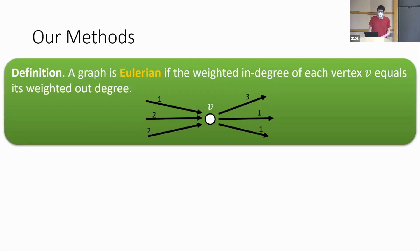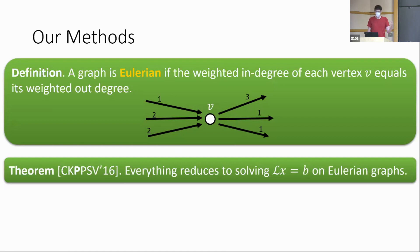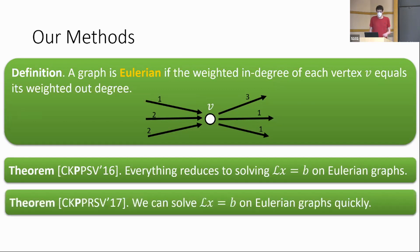Now I'll talk about how we did it. First, I want to talk about Eulerian graphs. A graph is Eulerian if the weighted in-degree of each vertex is equal to the weighted out-degree of each vertex. For example, vertex V has weighted in-degree 1+2+2=5 and weighted out-degree 3+1+1=5. If in-degree equals out-degree for every single vertex, we call the graph Eulerian. One of the things we show is that you can reduce the general case of arbitrary graphs to the Eulerian case via an iterative reduction, and then quickly solve directed Laplacian systems where the graph is Eulerian.